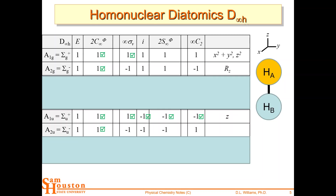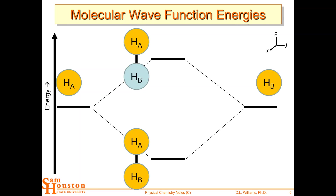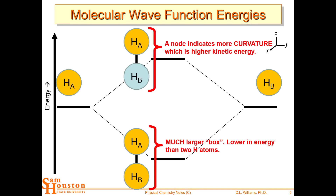If we took this 1s orbital and tried to project it through any other symmetry element in the character table, we'd get zero — no match for the other possible combinations of 1sA and 1sB. These are the only two combinations that survive when projected through this character table. A larger box gives lower energy, and higher curvature with a node gives higher energy — that's how they split apart in the MO diagram.